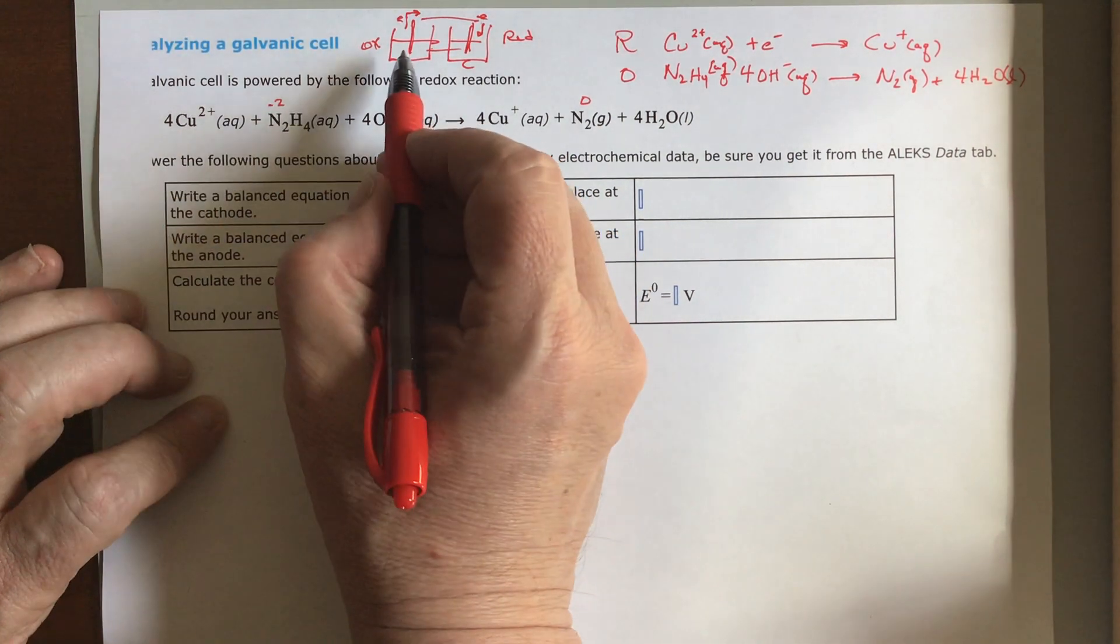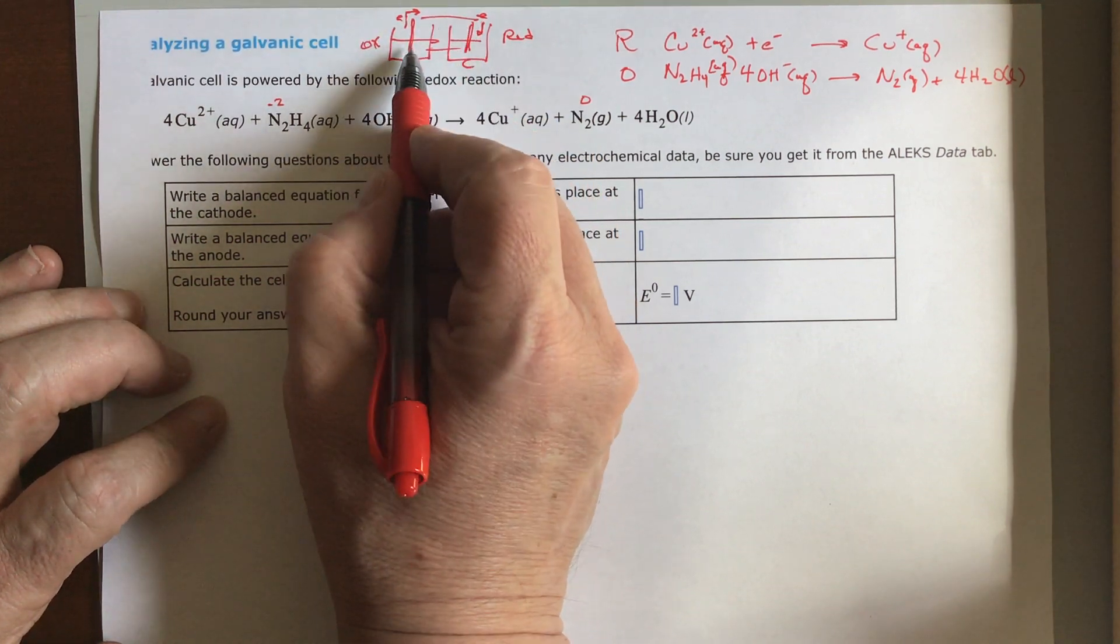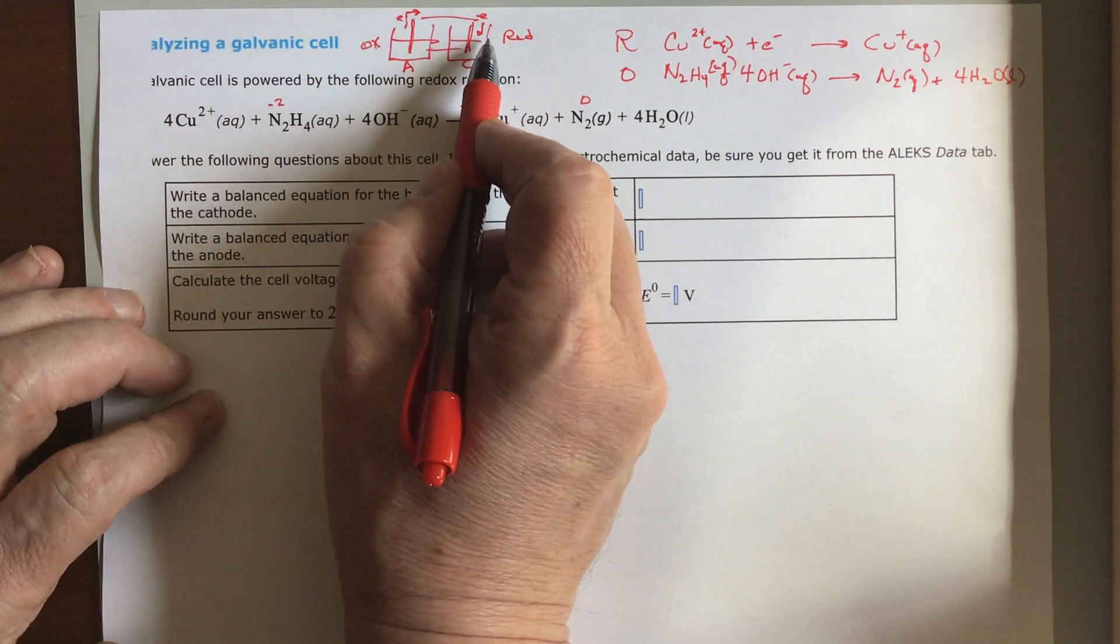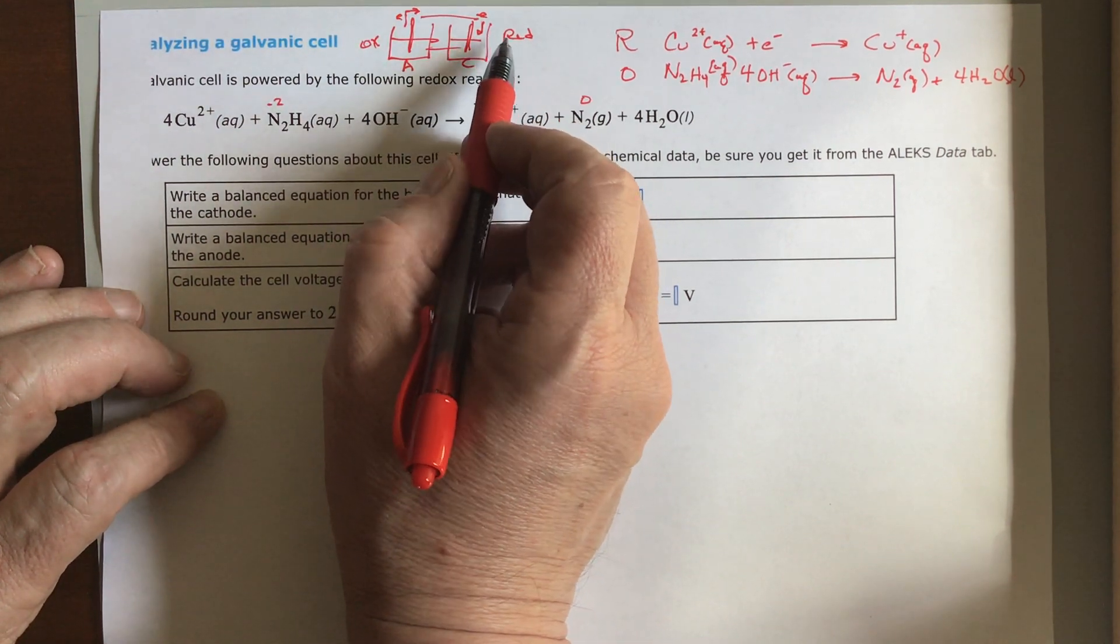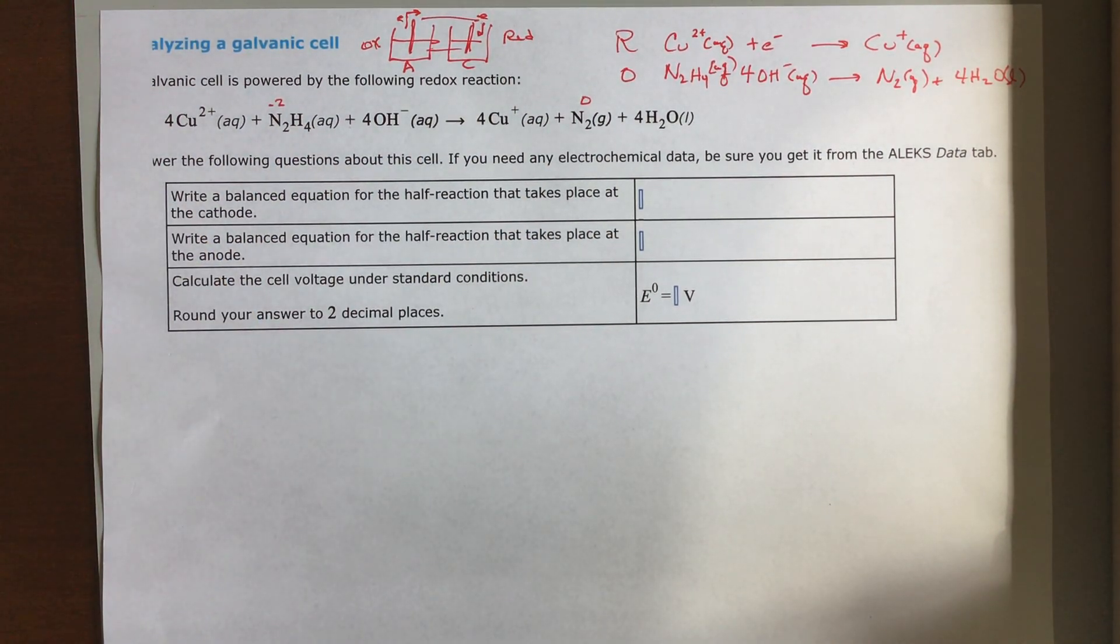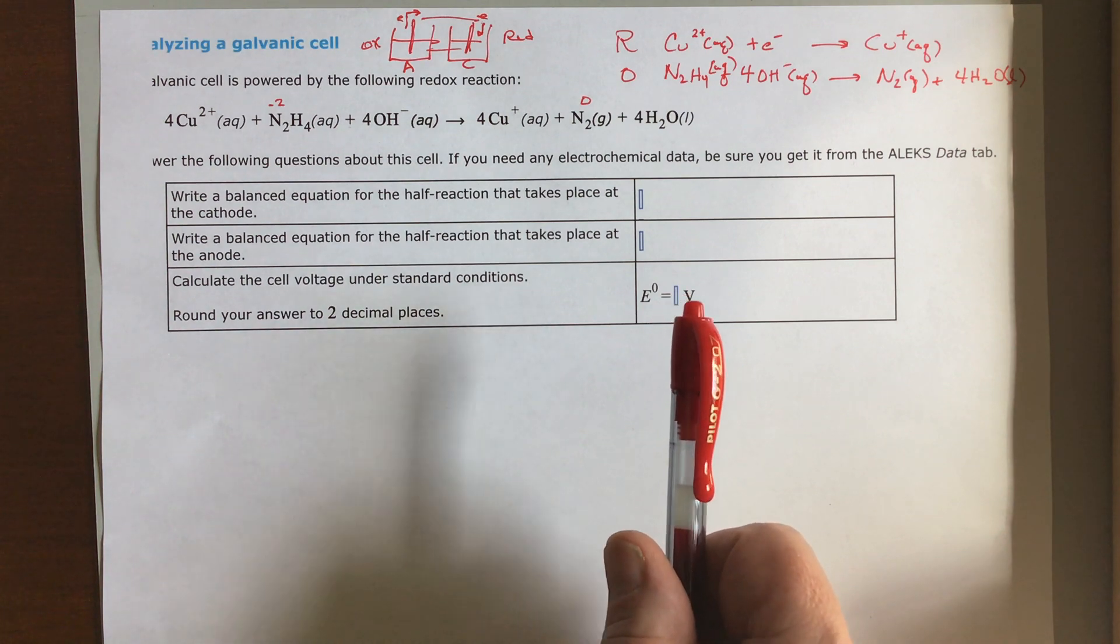Oxidation always occurs at the anode because the electron's running away, so this is being oxidized. And it's always being reduced at the cathode because electrons are coming in. Reduced means higher negative charge, and electrons are coming in, so you're going to have a higher negative charge. We'll need this in a minute for the cell voltage.